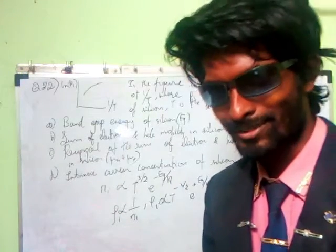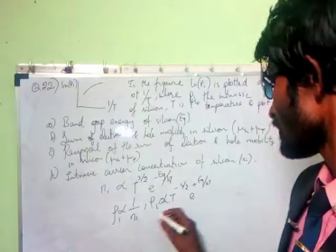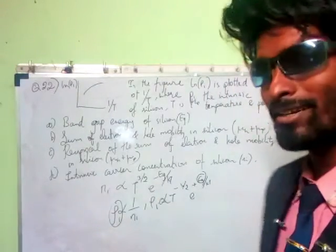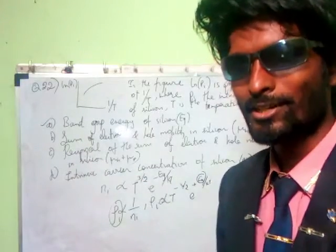I hope you got this complete thing. This rho_i is proportional to e^(E_g/kT), which gives the energy gap. That's the right option. Thank you very much.